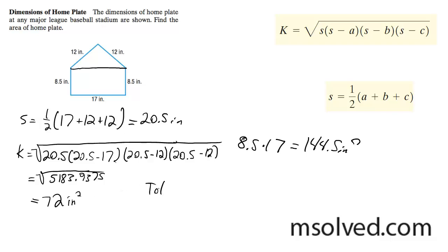So total area is equal to 72 inches squared plus 144.5 inches squared, which is equal to 216.5 inches squared. That's it. That's our solution.